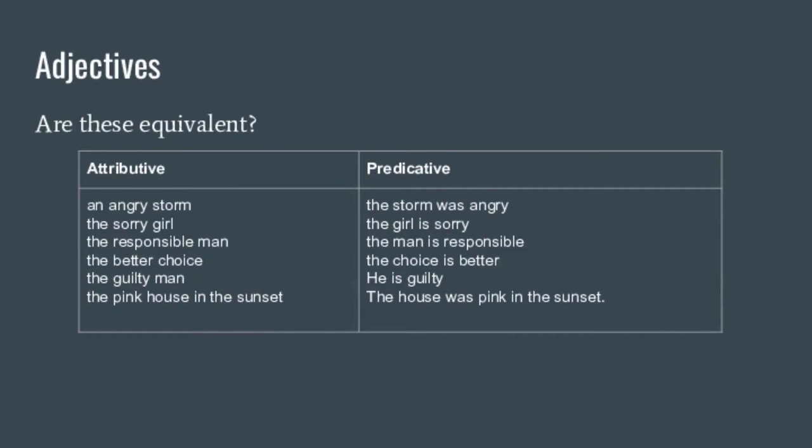Let's look at adjectives. We have attributive adjectives — when an adjective comes before a noun as a pre-modifier — and predicate adjectives, where it appears in the predicate after a linking or copular verb. 'An angry storm' versus 'the storm was angry' — does it mean the same thing? Actually, no — 'the storm was angry' sounds kind of weird. 'The sorry girl' versus 'the girl is sorry' — different meanings: 'the sorry girl' means pitiful, while 'the girl is sorry' means she's apologetic. 'The responsible man' has a positive meaning, but 'the man is responsible' — responsible for what? Responsible for the accident. So these can sometimes have different meanings in attributive or predicate position.